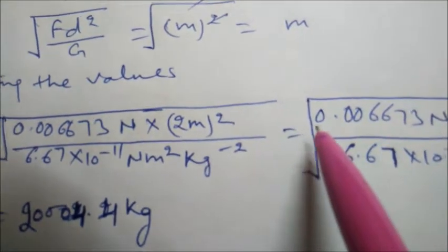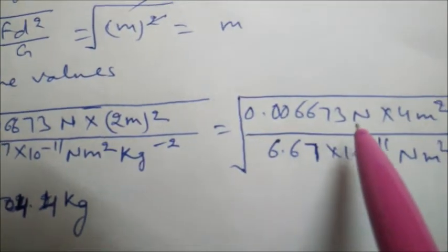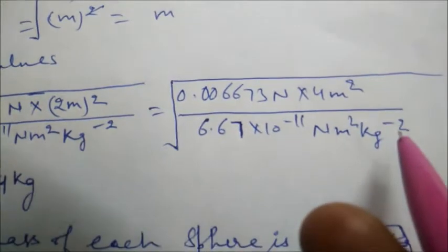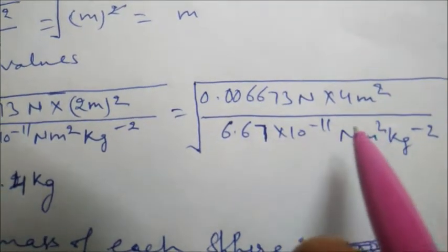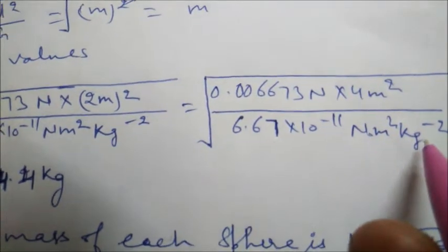Now putting all these values, we will solve this equation. Newton meter square will cancel with Newton meter square. We will be left with kilogram per kilogram square.